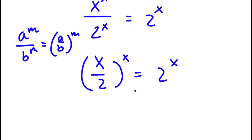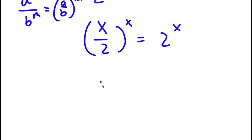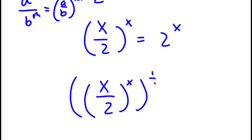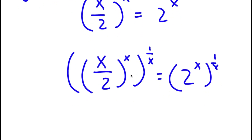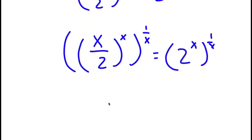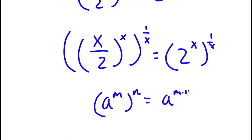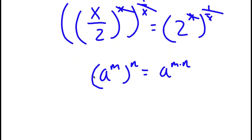Now I'm going to take the power of 1 over x on both sides. So I have x over 2 to the power of x, to the power of 1 over x, is equal to 2 to the power of x to the power of 1 over x. Remember, if I have something in the form a to the power of m to the power of n, this equals a to the power of m times n. So x times 1 over x cancel out, and again these two cancel out.